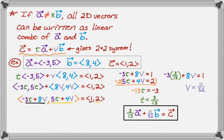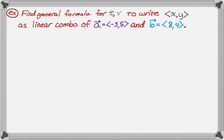But what I want to do is a more general problem. So it's the same idea, but a little different. So what we're going to do this time is find a general formula for T and V so that we could write any vector with components X and Y as a linear combination of A and B. So it's the same idea. So we're still looking at this equation. So T times A plus V times B. This time we want it to equal X, Y. So not specific values, but in general.